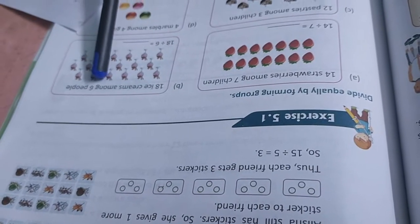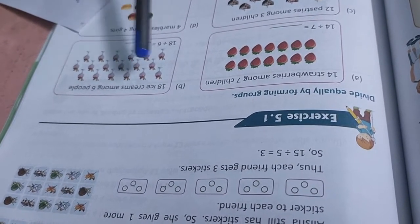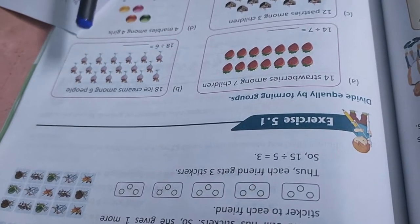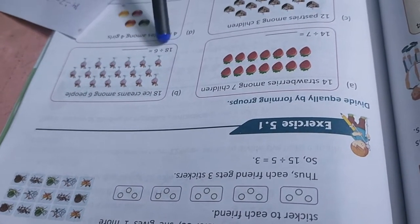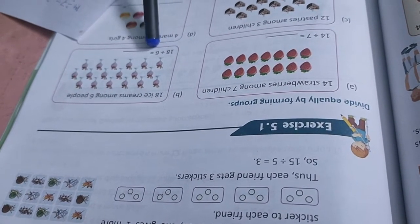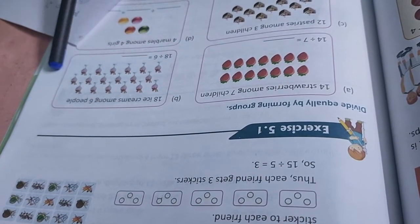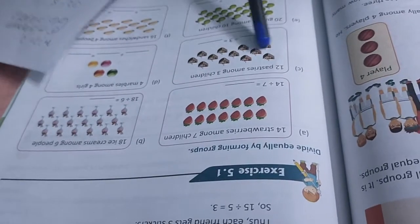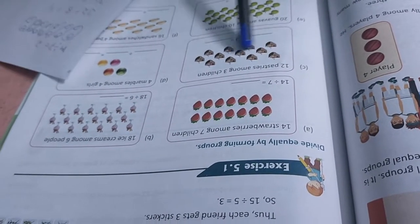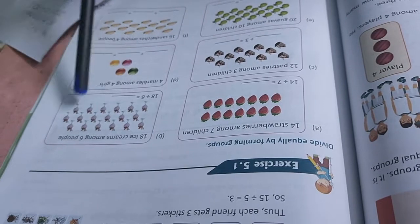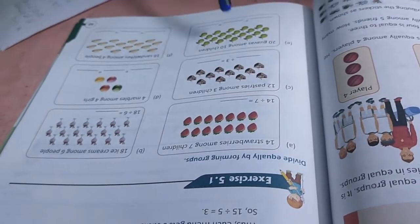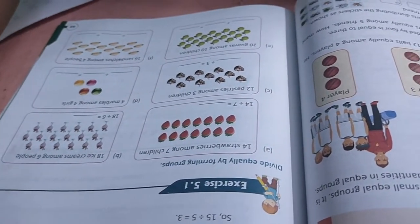Now, 18 ice creams among 6 people. Here, 18 ice creams are there. Each will get 3. 18 divided by 6. 6 threes are 18. So 3, 3, make 6 groups. 14 pastries, same thing. 4, 4 will get. You just circle this one and all the pictures you separate by circle.